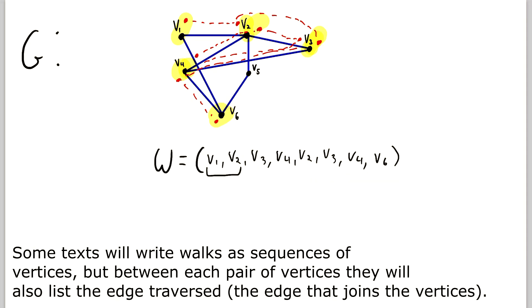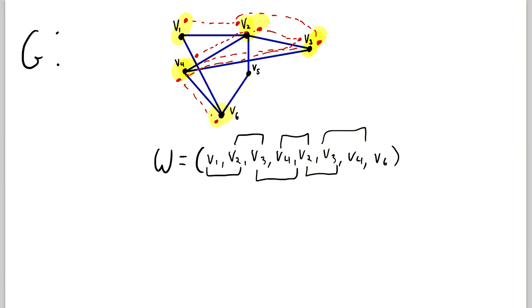You can see that all of the consecutive vertices are adjacent in G. So when we were describing our walk, we only traveled through edges. For example, we never went from V5 to V1 because there's no edge joining those vertices. So if we were to do that, that wouldn't be a walk. In a walk, like I said, consecutive vertices have to be adjacent.